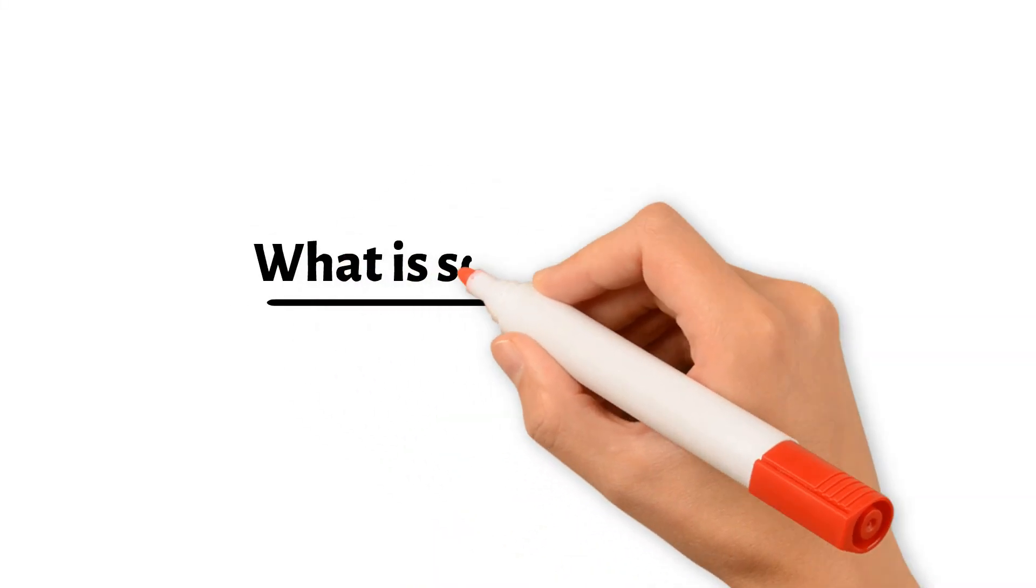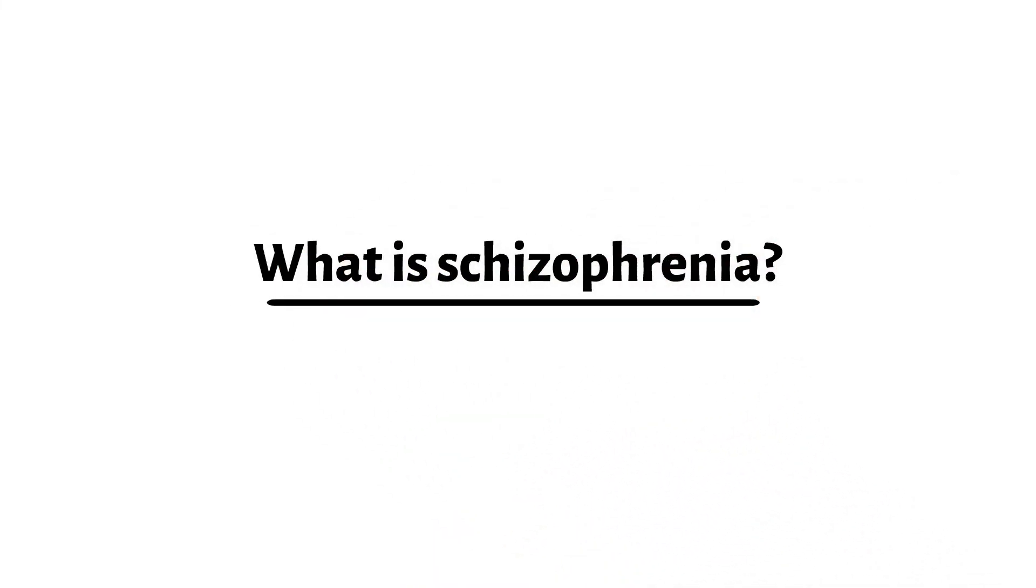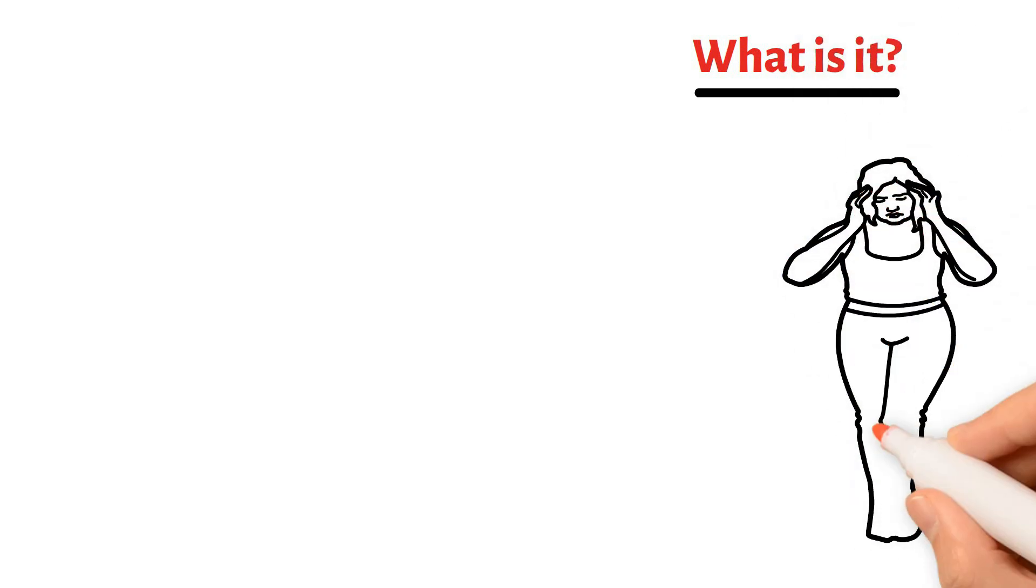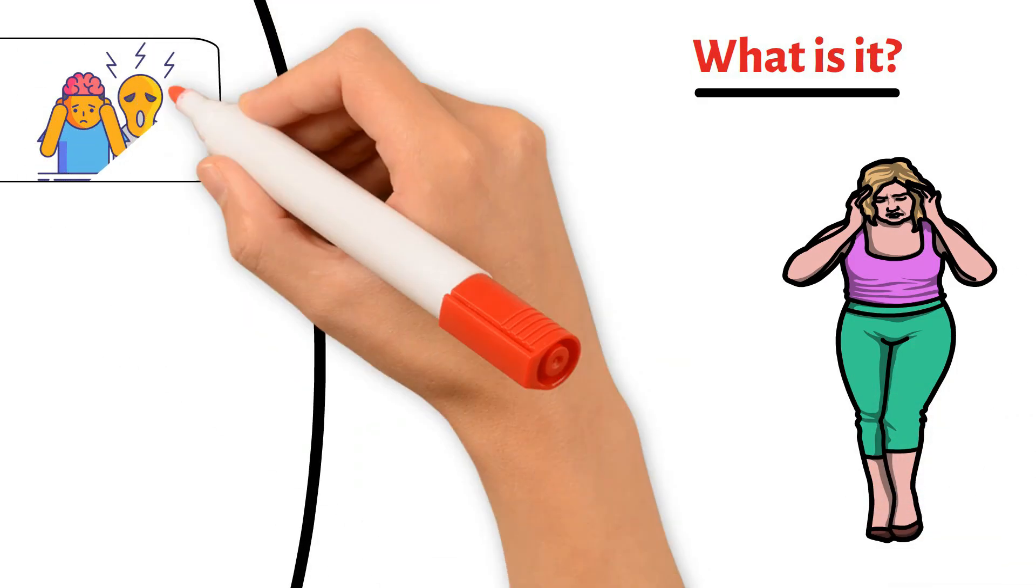First, we will understand what is schizophrenia. Schizophrenia is a serious mental disorder in which people interpret reality abnormally. This can lead to some very intense experiences like hallucinations,